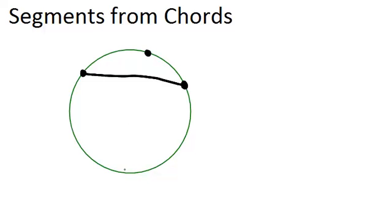If I draw a second chord that intersects my first, notice that four different little segments have been created. One, two, three, and four. And there is a relationship between all four of these segments.